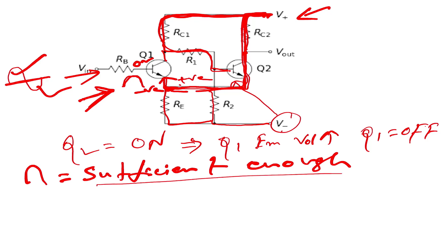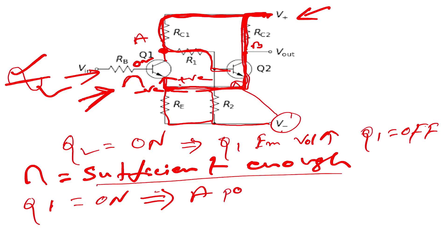The voltage is the same as 0.7V. Q is on. The point is the A point. A point is the voltage. Q is on. This is the current through the collector and emitter — so this is the collector current, this is the flow. This is the high point.